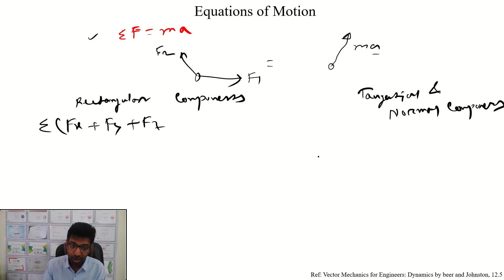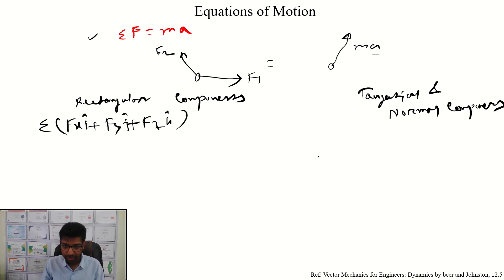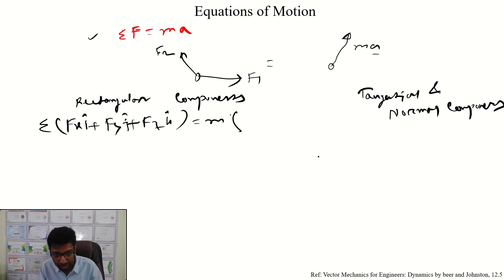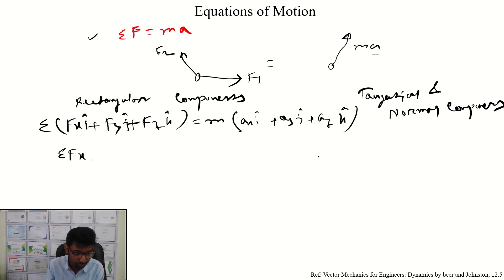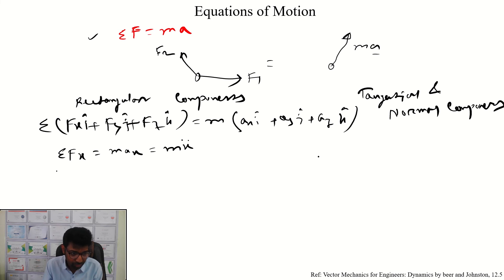The summation of Fx, Fy, and Fz equals mass into acceleration components: ax·i plus ay·j plus az·k. So Fx equals m·ax, which is m·x double-dot; Fy equals m·ay, which is m·y double-dot. This is the rectangular component form.